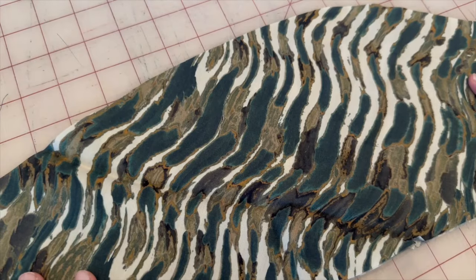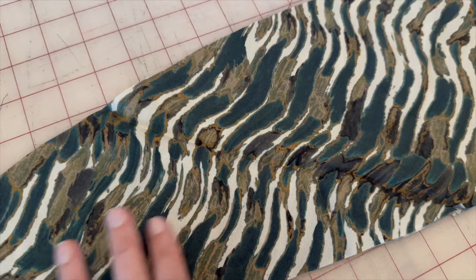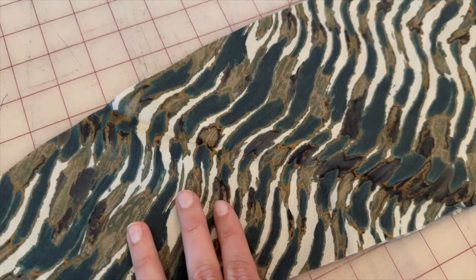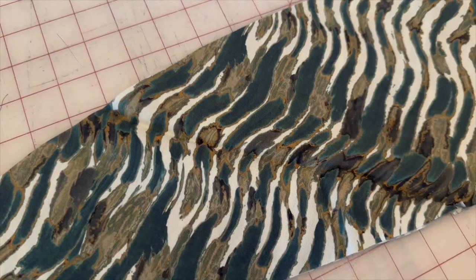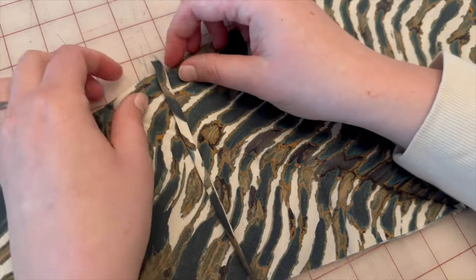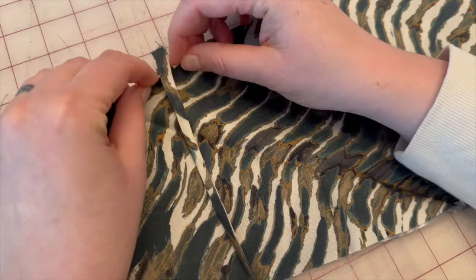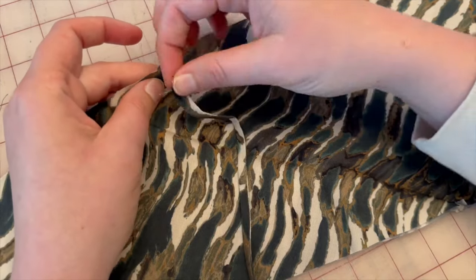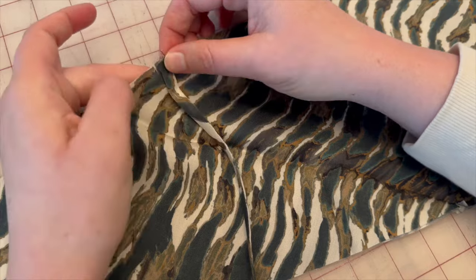Now we are going to take the main fabric for piece one and we are going to attach our straps to the main fabric. So I put little notches right here, but you can do the little dots, but with my fabric being so dark, I couldn't see the dots. So I did notches.